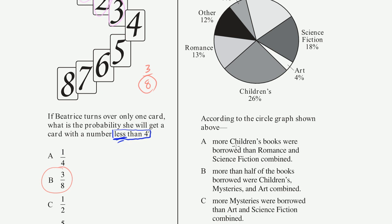The first statement says more children's books were borrowed than romance and science fiction combined. Let's see if that's true. Children is 26%. And then romance and science fiction combined. Romance is 13 and science fiction is 18. So what's 13 plus 18? 3 plus 8 is 11, and then we have 1 plus 1 plus 1, and so then we get 31.